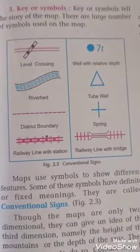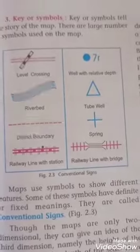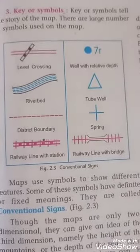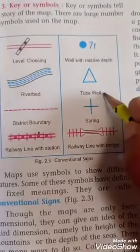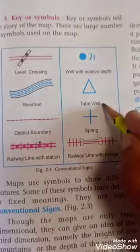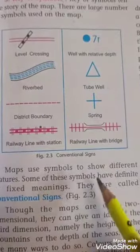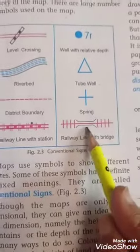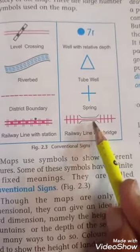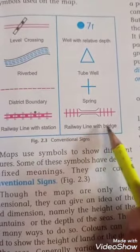Traffic symbols indicate the rules of the traffic. These conventional signs are used to indicate the map, about using the map.